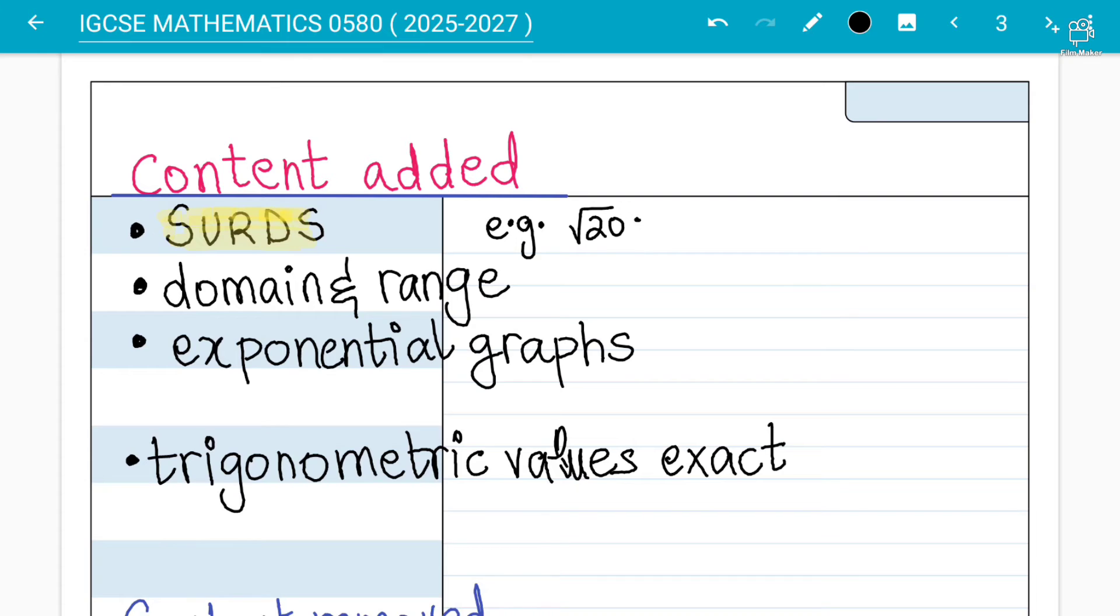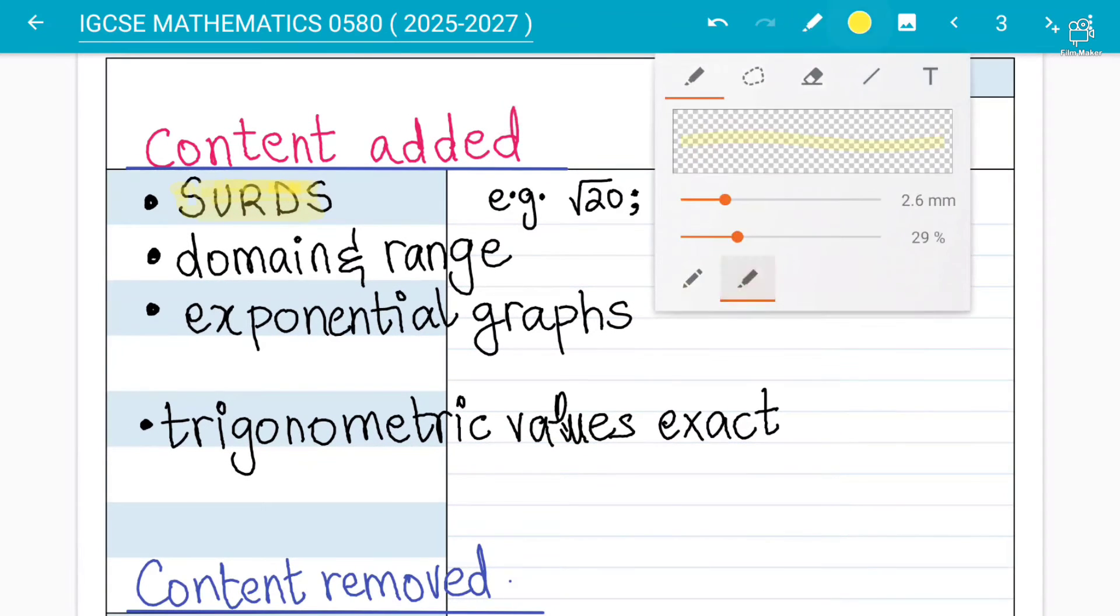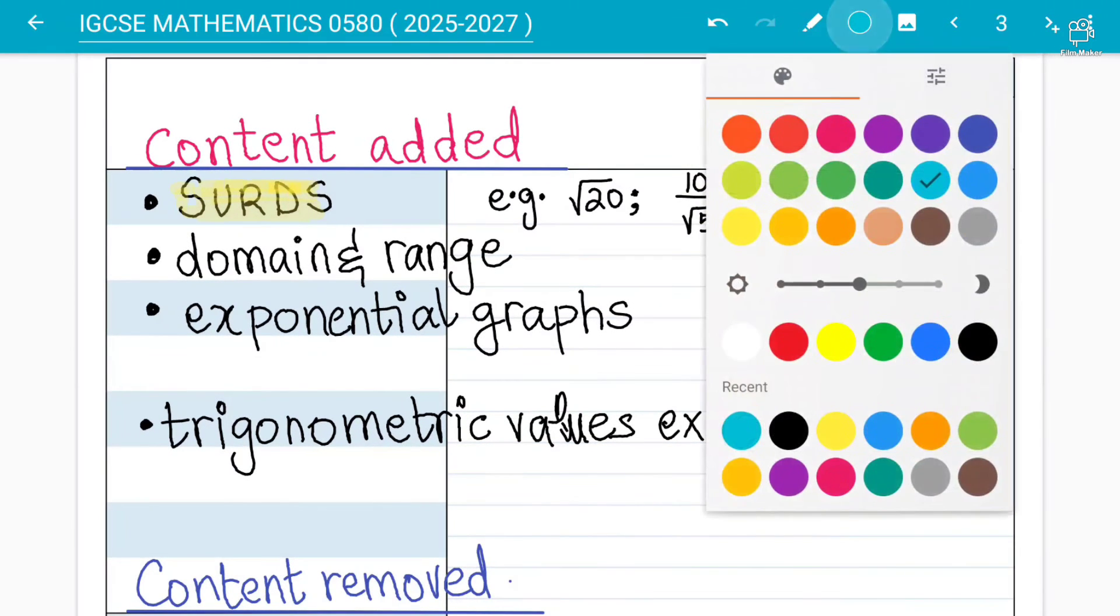There will be surds now, so you can say for example that is basically like what will be the square root of 20 you have to work out for this. This is already common in basically Pearson Edexcel. So this is like square root of 10 times 5 will become 2 square root 5, how it becomes this thing so we'll talk about these things.